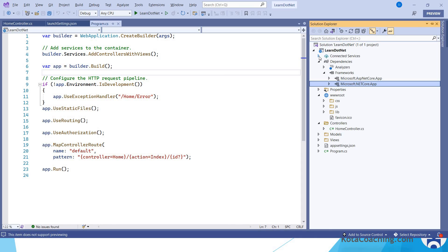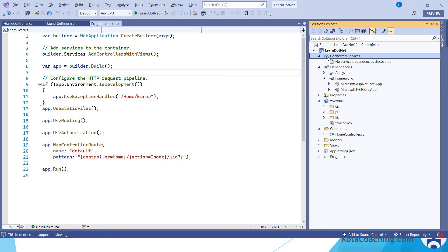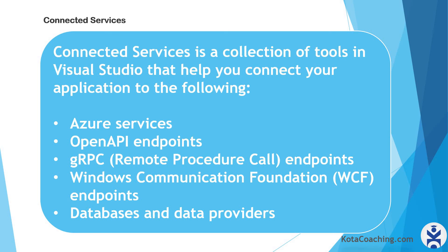If you remember in the previous .NET framework, you added web services and similar things — we can add those here. We can also add cloud services. Connected Services is a collection of tools in Visual Studio that help you connect your application to various services. You can add open API endpoints, gRPC remote procedure calls, WCF, databases, and data providers — all of this can be added inside Connected Services. In an upcoming video I will show how to add services.